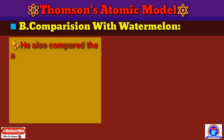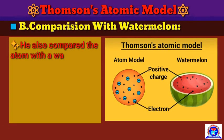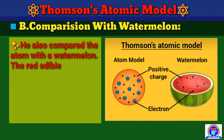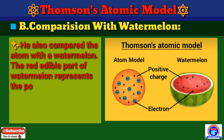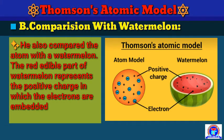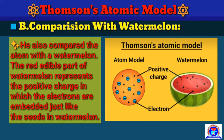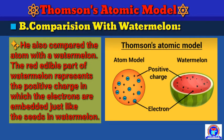He also compared the atom with a watermelon. In the Thomson model resembling a watermelon, the red edible part of the watermelon represents the positive charge, in which the electrons are embedded just like the seeds in the watermelon.